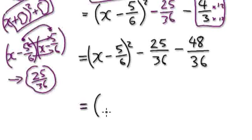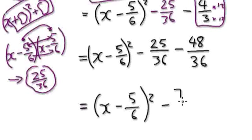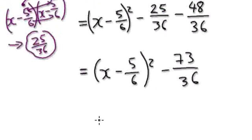So this becomes x minus 5 over 6 squared. And then this will become, wait a minute, 60, 73. This will become 73 over 36. Okay. And then have a quick glance to see if you can simplify this. I don't think you can. So let's continue.